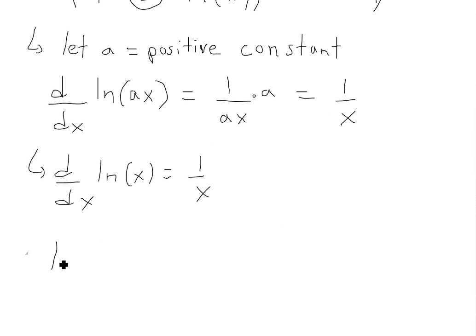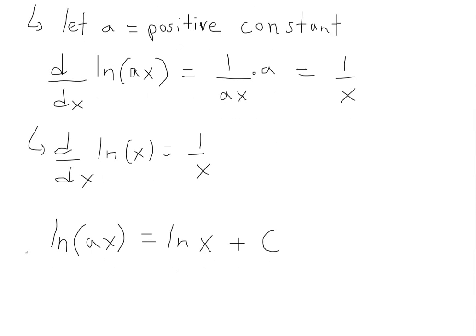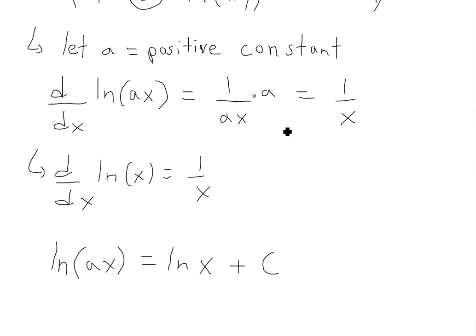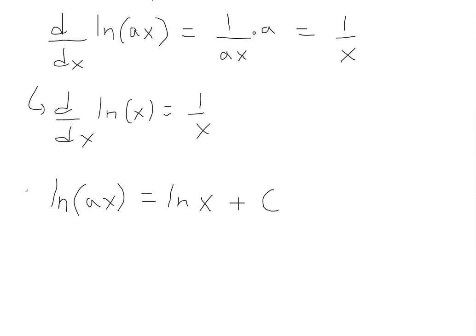So for example, ln(ax) right here has to equal ln(x) plus C, because remember the derivative is the exact same, but they're separated by a constant right here. So when we have this constant, as you can see, the derivative of this side is going to equal the derivative of this side, this constant just cancels out. So if the derivatives are the same, then it has to be the same.